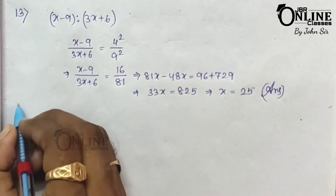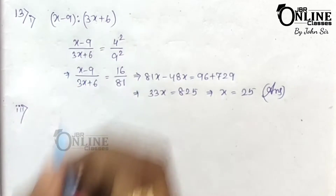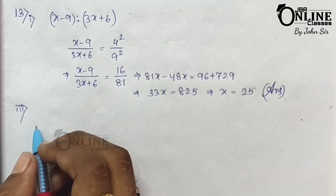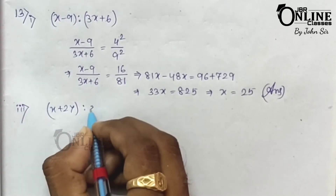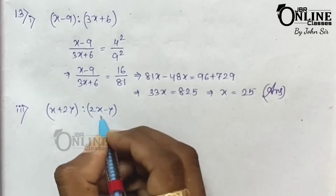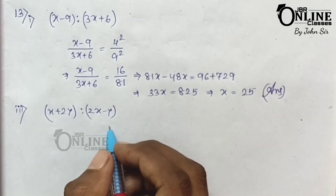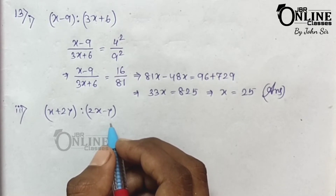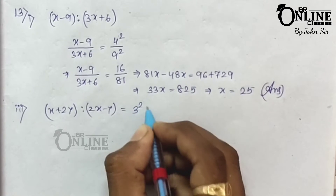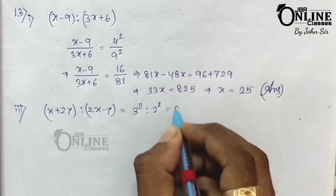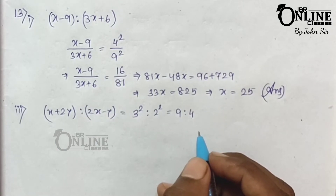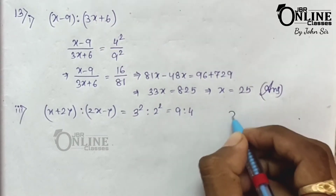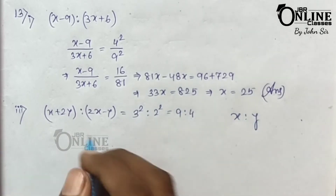Now sum number 13.3: if x plus 2y is to 2x minus y is equal to the duplicate ratio of 3 is to 2. So 3 is to 2 means 3 squared is to 2 squared, that means 9 is to 4. Then you have to find out x is to y, the ratio between x and y.